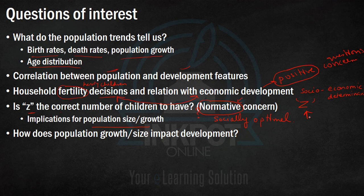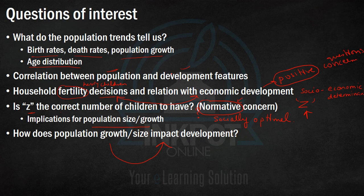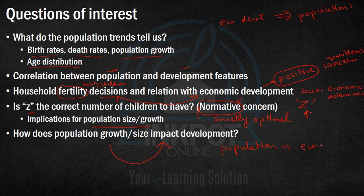Finally, we want to understand how population growth impacts development. We are considering both questions: how does economic development affect population size, and how does population affect the socio-economic development of a nation? We want to understand the direction of causality — does improved economic development lead to higher population, or does higher population lead to low economic development? These are the questions we will be concerned with in the rest of the chapter.